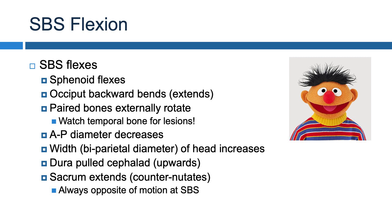There are two key measurements we talk about with motions at the SBS: the AP, or anterior-posterior, diameter of the head, and the width, or biparietal diameter of the head. Both of these will change with various motions at the SBS. In SBS flexion, the AP diameter is going to decrease, and the biparietal diameter of the head is going to increase. What you're left with is a short and wide football-like head, which looks like Ernie from Sesame Street. Test questions commonly ask how the head will look in SBS flexion — remember that the AP diameter decreases and the biparietal diameter increases.